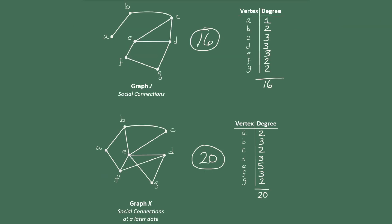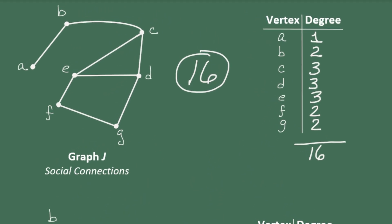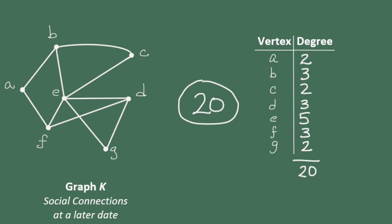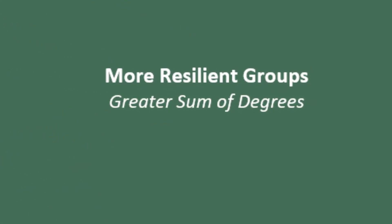So one of the things that a sociologist is concerned about is how resilient the group is. In other words, how likely it is that the group will stick together and still have connections. So if we think about graph J, which is a point in time in the past where this particular group had sixteen connections, and then time has passed, some of the individuals have made more friends in the group and some have lost some connections. But overall, the number of connections has increased to twenty. So which group do you think would be more likely to be resilient? Well, a greater sum of degrees represents more connections and a more resilient social group.